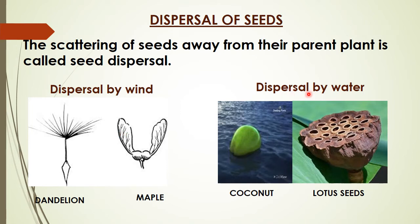Next is dispersal by water. Some seeds which grow in water or near it are dispersed by water. For example, lotus seeds are embedded in a cup-shaped spongy fruit which floats in water. Seeds of some plants such as coconut have a fibrous covering which helps them float in water.